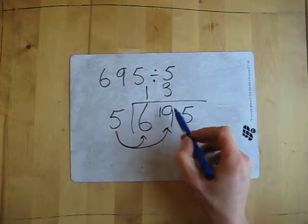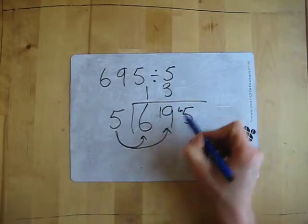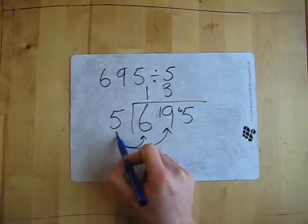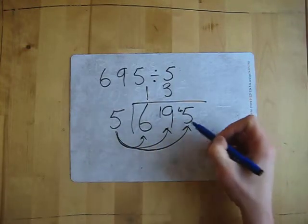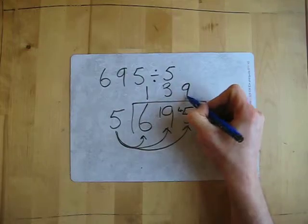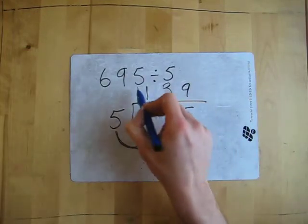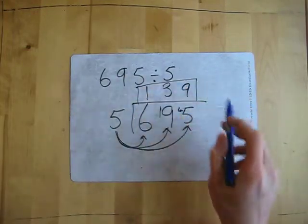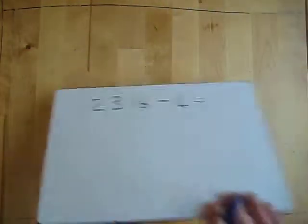3 times 5 is 15 — what's left over? 4. And finally, how many times does 5 fit into 45? It fits in 9 times. What's left over? Nothing. So my answer is 139. Let's try another one. How many times does it fit in? What's left over?